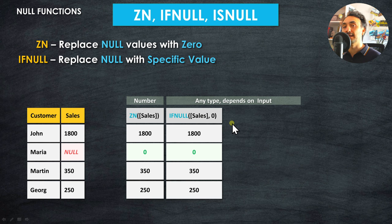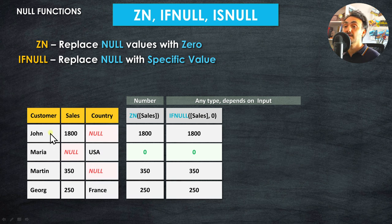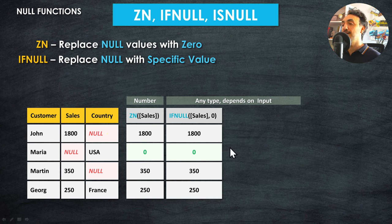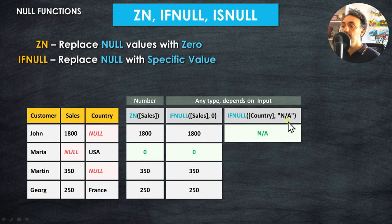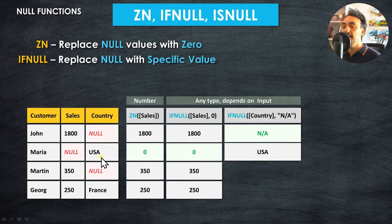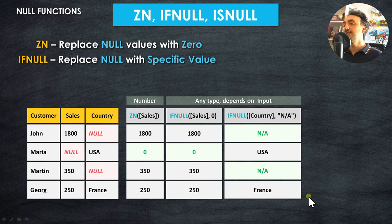A key difference between ZN and IFNULL: ZN accepts only numbers, while IFNULL accepts any field type. For example, if we have a Country field with nulls for John and Martin, we can't use ZN because it's a string. Instead, we use IFNULL with the syntax IFNULL(Country, 'N/A'), replacing nulls with 'N/A' and leaving existing values unchanged.